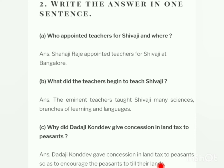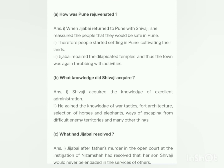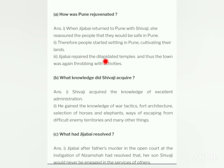Question number three: give the answers in 2 or 3 sentences. Question A: how was Pune reunited? When Jizabai returned to Pune with Shivaji, she reassured the people that they would be safe in Pune. Therefore people started settling in Pune and cultivating their lands. Jizabai repaired the dilapidated temples, and thus the town was again throbbing with activities.